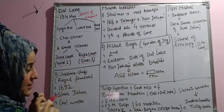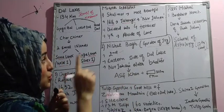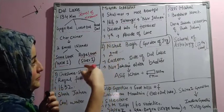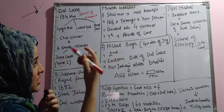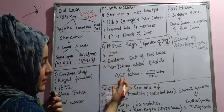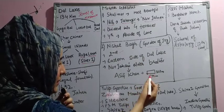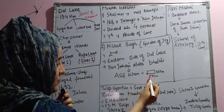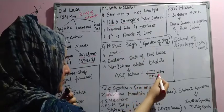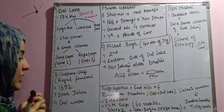Remember this: Asif Khan made the name Noor — meaning Noor Jahan, who was Jahangir's wife. Regarding dimensions, the length is 544 meters and the breadth is 329 meters.